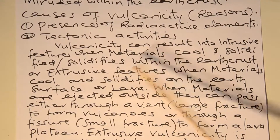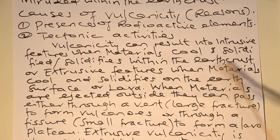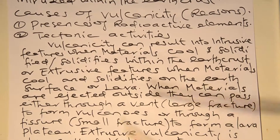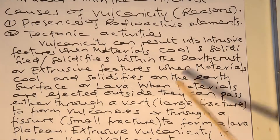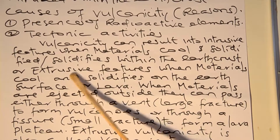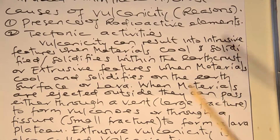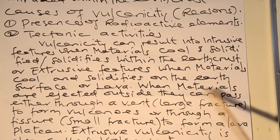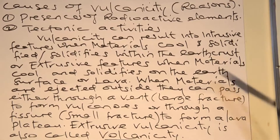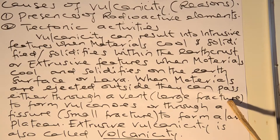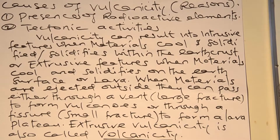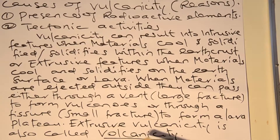Volcanoes can result in intrusive features where material cools and solidifies within the crust, changing from liquid to solid state within the crust. They can also form extrusive features when materials cool and solidify on the earth's surface. Materials ejected outside can pass through a vent, which is a large fracture, to form a volcano, or through a fissure, a small fracture, to form a lava flow. Extrusive volcanism is also called volcanism.